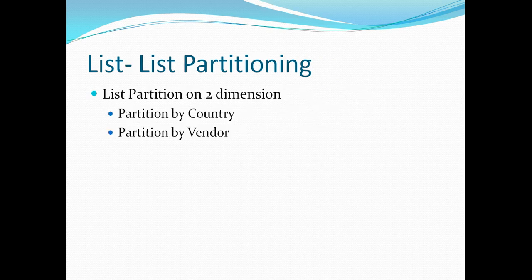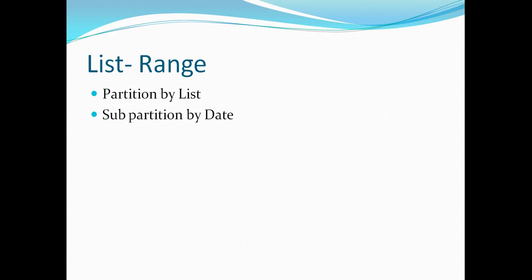For list-list partitioning, you use list partitions on two dimensions. For example, as a data warehouse manager of an insurance organization operating in multiple countries with different vendors, you can create partitions on country and further sub-partitions on the vendor column. For list-range partitioning, you create partitions by list on the region column — segregating Asia Pacific, EMEA, and North America — then further sub-partitions on a date column to get data for different years in different segments.